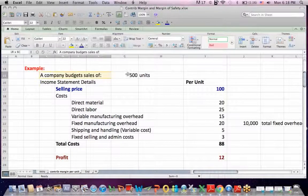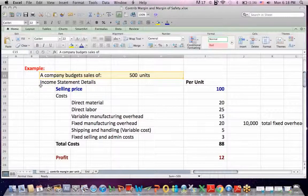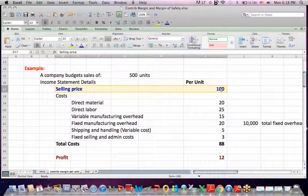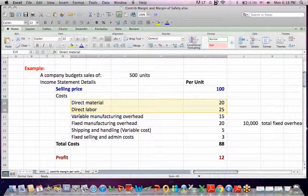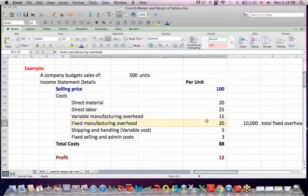So here's an example. Let's assume a company has budget sales of 500 units. And here's the income statement detail. We have per unit numbers on selling price, direct material and labor costs, variable manufacturing overhead,